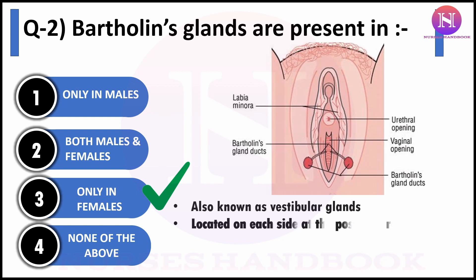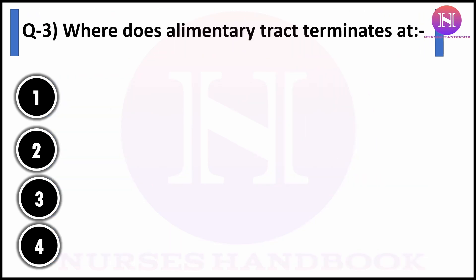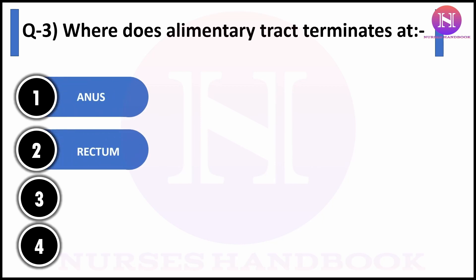Bartholin's glands, otherwise known as vestibular glands, are found only in females. They are located slightly posterior on the left and right of the vaginal wall. The average size is 0.5 centimeters. The main function is to secrete mucus to lubricate the vaginal wall and vulva.